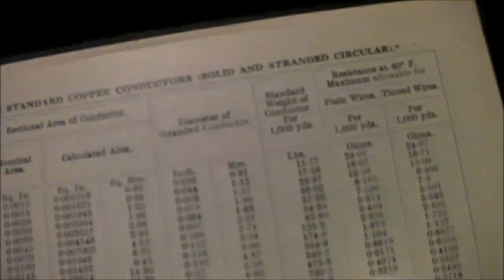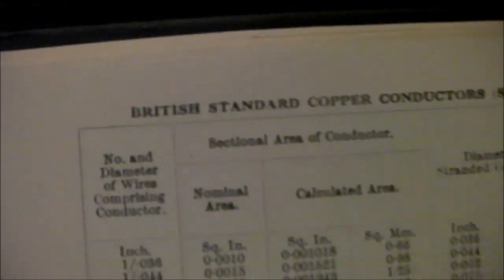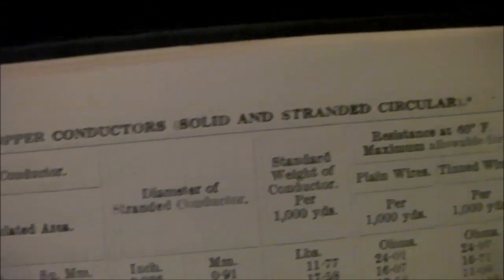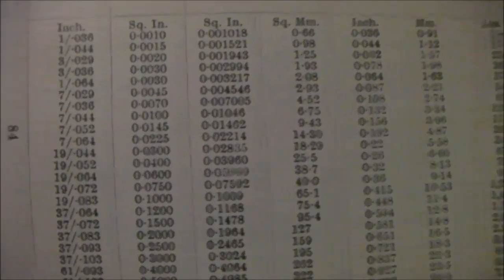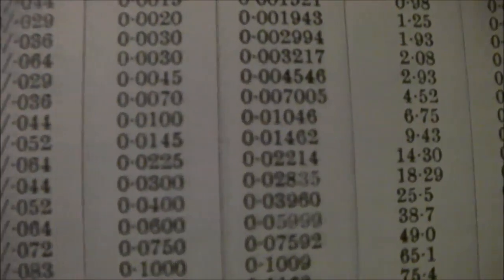British regulations for overhead lines. Standard aluminium conductors. Aluminium overhead lines. I don't know if we use... What are our overhead lines made out of? I don't know, it probably varies from country to country. In Russia they're probably made out of paper or something. British standard copper conductor solid and stranded circular. I don't know what it's saying, but there are a lot of numbers to go with it, so it's probably important.